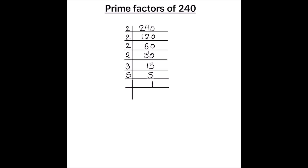Now the number 240 is fully divided. Let's write 240 as the product of its prime factors. The prime factors will be all the numbers on the left hand side of the ladder. So 240 is 2 times 2 times 2 times 2 times 3 times 5.